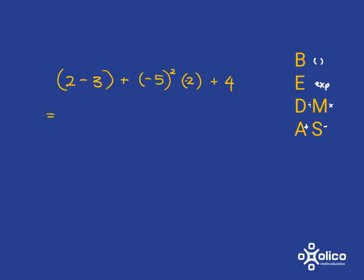Okay, let's deal with this one. So we do have some brackets with an operation inside them here, so that's the very first step we need to do. 2 subtract 3 is equal to negative 1.